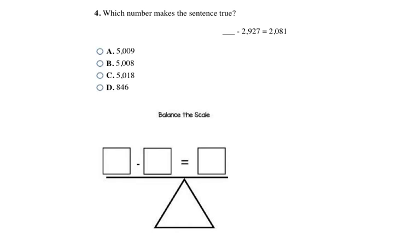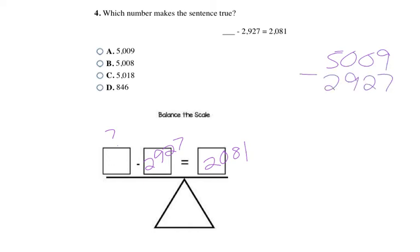Now I'm going to look at some subtraction problems. On the left side I have some mystery number minus 2927, and that equals 2081. That's not a problem I know right off the bat, so I can use guess and check. I could take choice A, 5009, and subtract 2927 to see what I get. If it doesn't work out, I'd try 5008, then 5018, then 846, until I get an answer that gives me 2081.